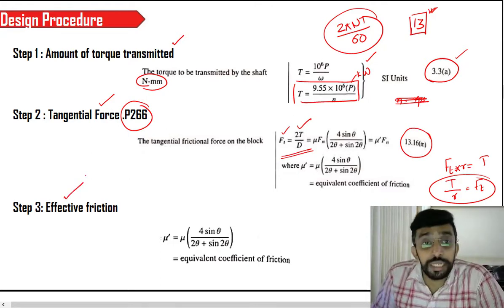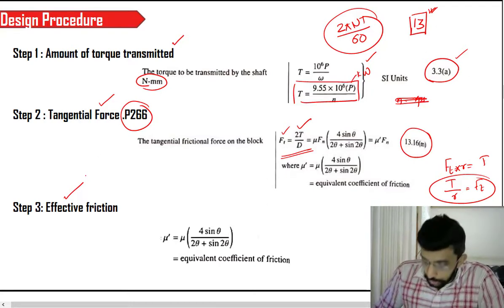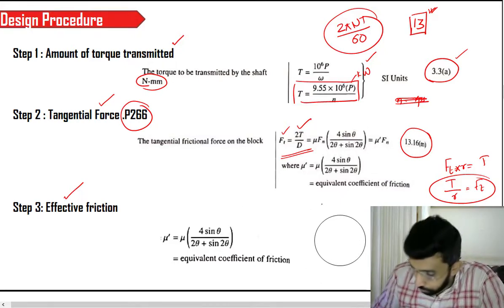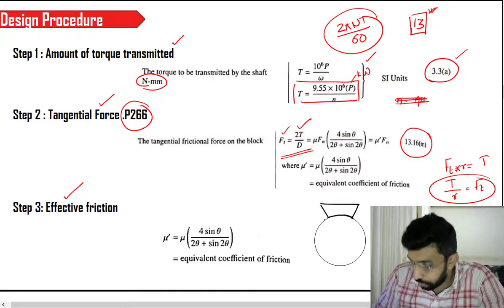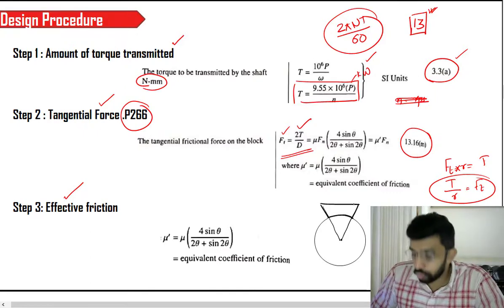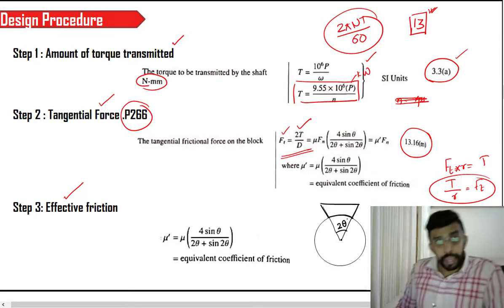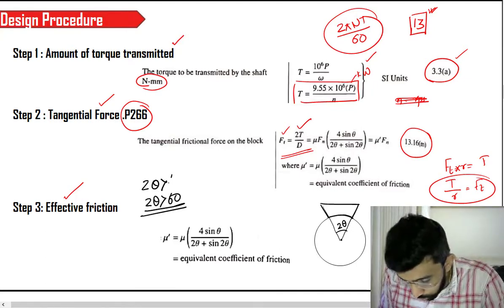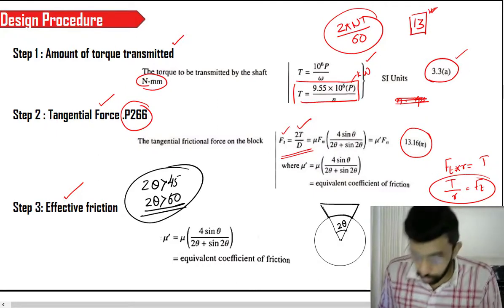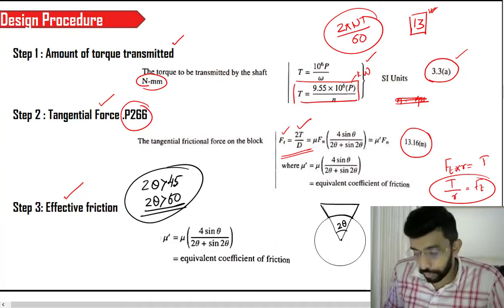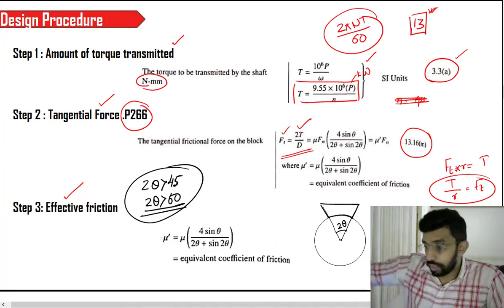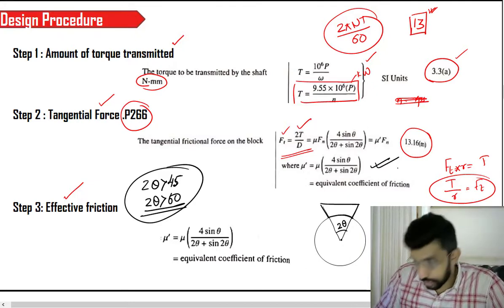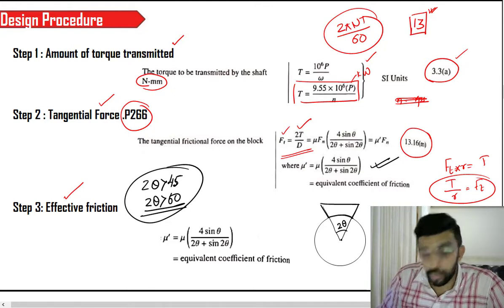In the third step, you are supposed to find out the effective friction value. When we take the case of a brake drum and a brake shoe, if you connect the two ends of the shoe towards the center, you get an angle of 2θ. If 2θ is greater than 60 degrees — some textbooks say greater than 45 degrees — you are supposed to find out the effective friction value using the equation: μ' = μ × 4sinθ / (2θ + sin2θ).